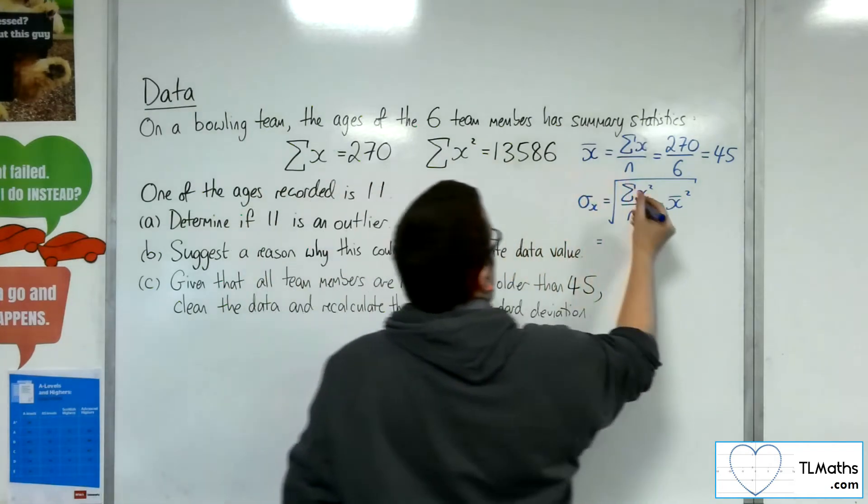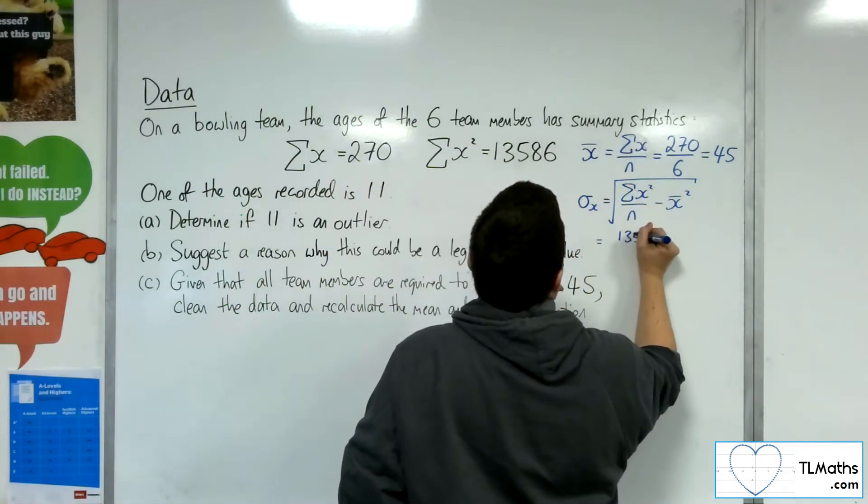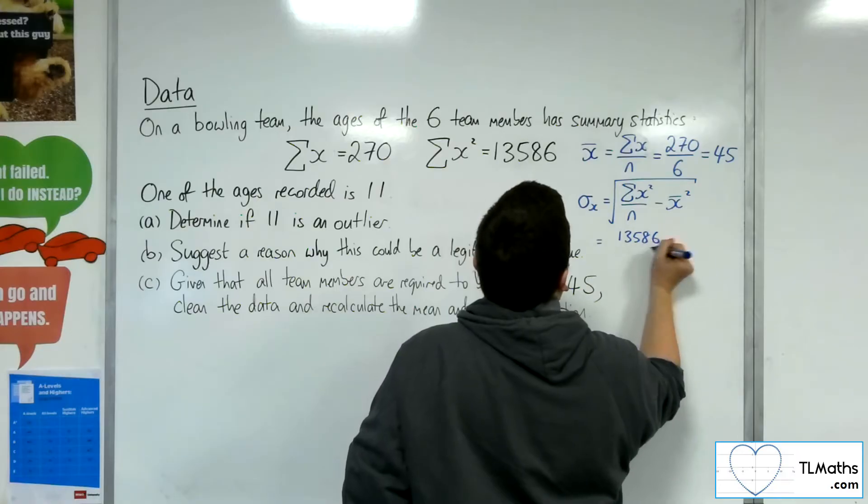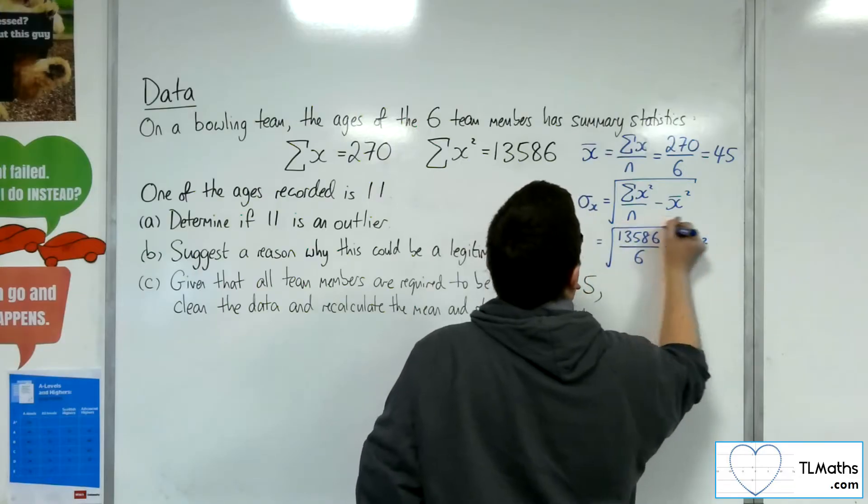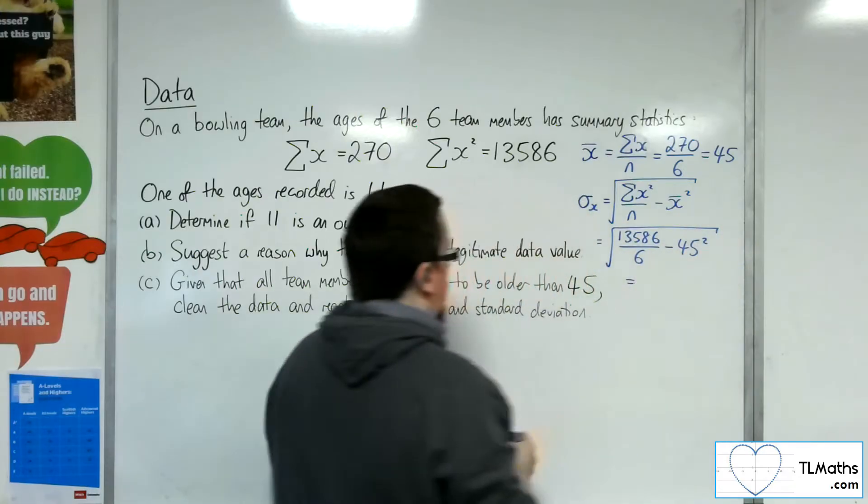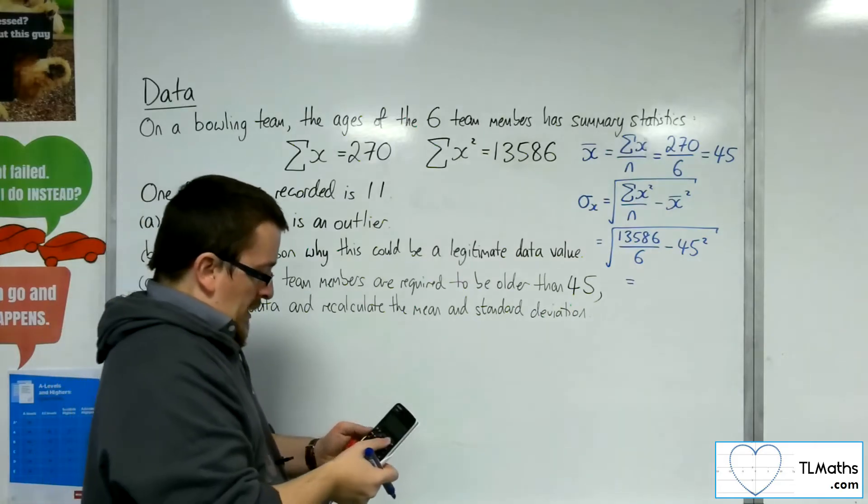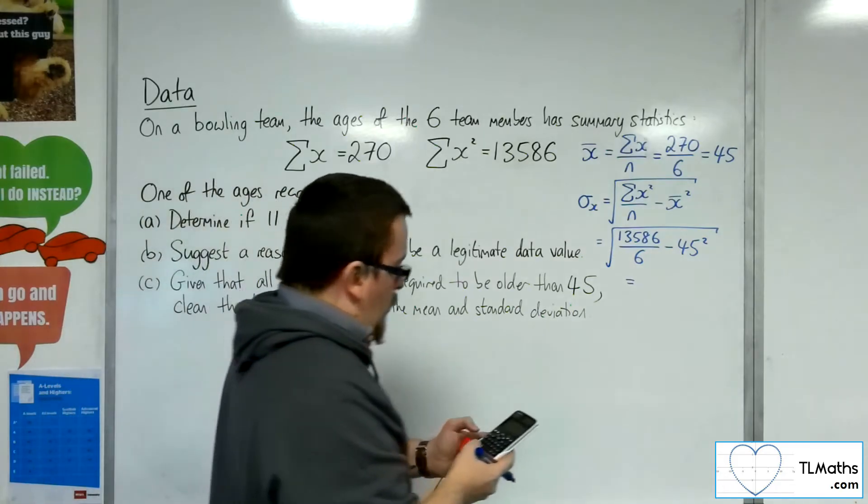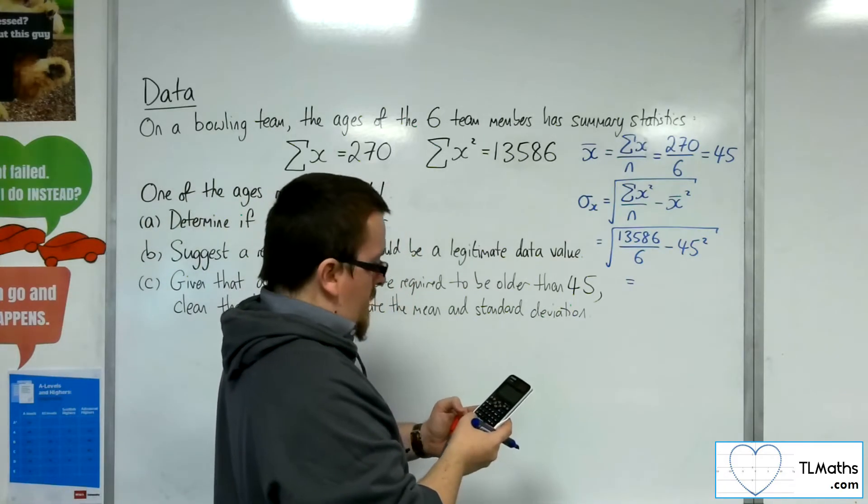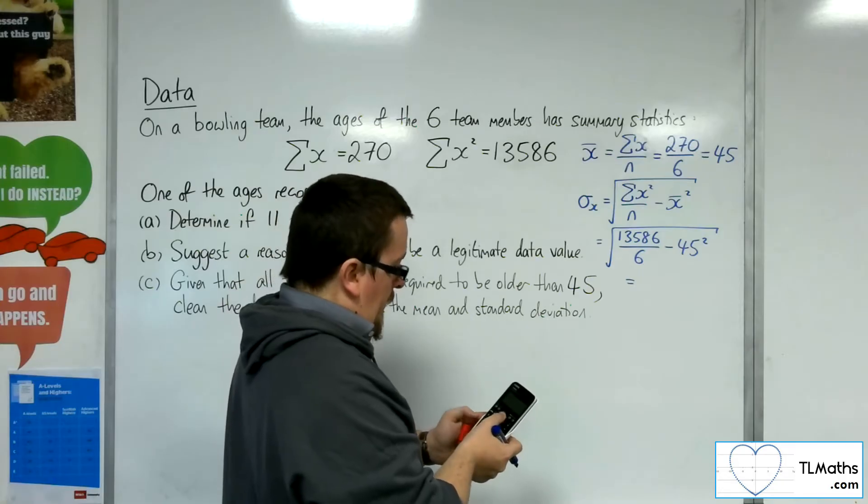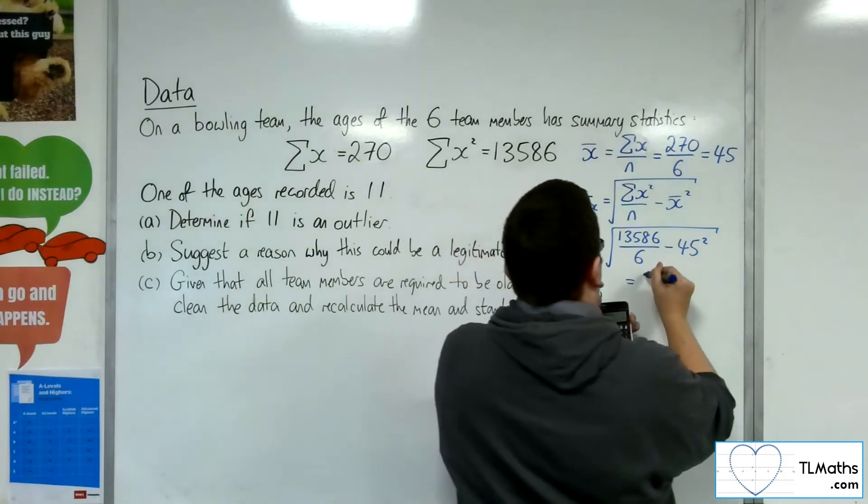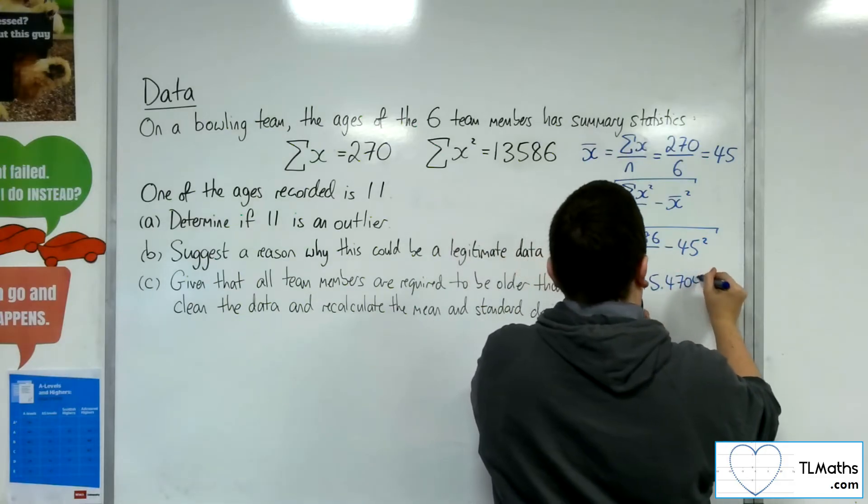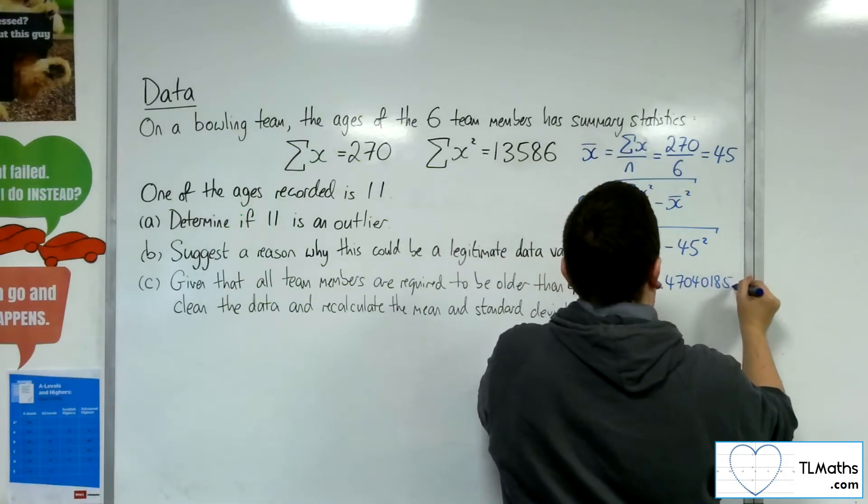So we've got the sum of the x squareds: 13,586. We've got divide by n, so 6, take away the mean squared, square root. So we've got 13,586 over 6, take away 45 squared. And it's 15.47040185.